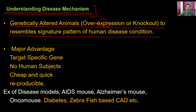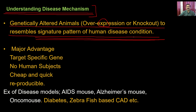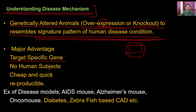Achieving a perfect signature pattern of human disease is very challenging, but it can be accomplished with transgenic animals by overexpressing or knocking out a specific gene. This is very precise — you are affecting only one specific block, whereas conventional methods may affect multiple systems simultaneously without your awareness. The transgenic approach is therefore target-specific, affecting only the genes of interest.